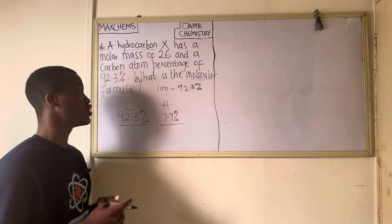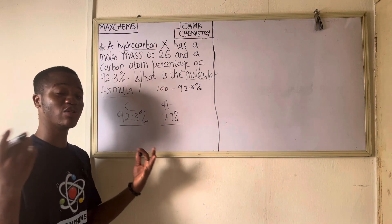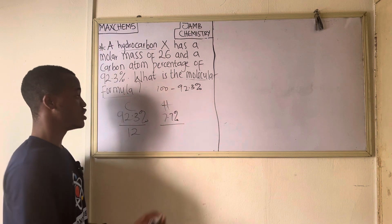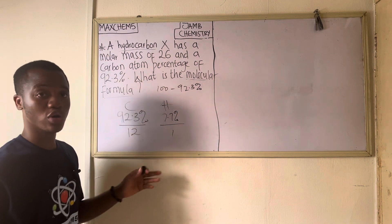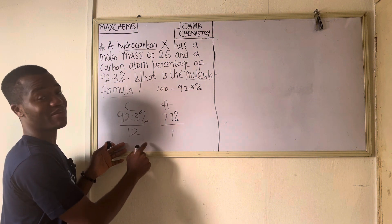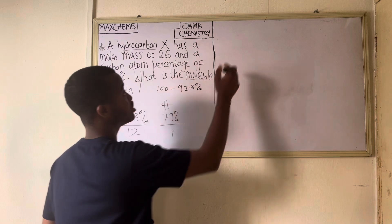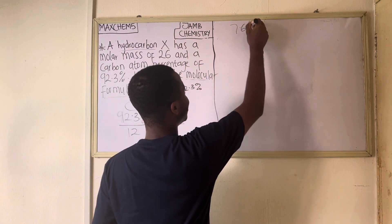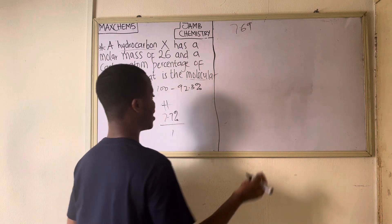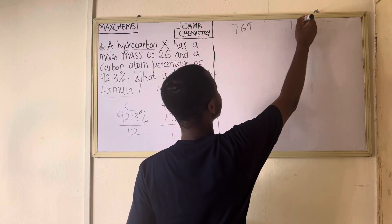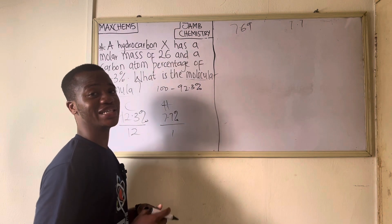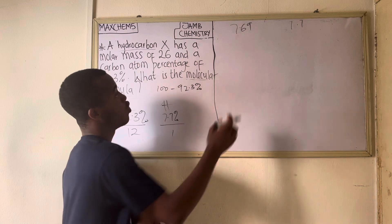The next step after finding the percentage of hydrogen is to divide by the atomic masses of each element. The atomic mass of carbon is 12 grams per mole, and the atomic mass of hydrogen is 1. So we divide: 92.3 percent divided by 12 gives us 7.69, and 7.7 divided by 1 gives us 7.7. After doing this, the next step is to divide by the lowest value.